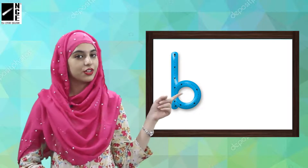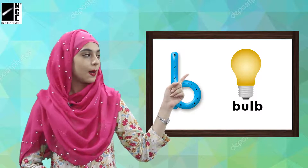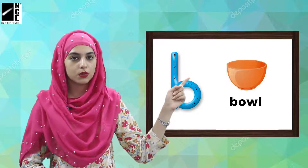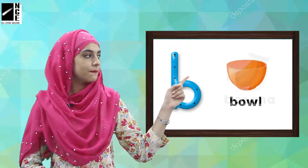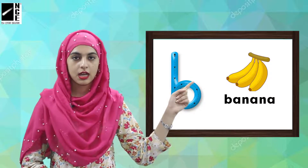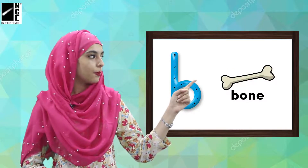Here is the picture of B. Now what are we going to do? Let us see pictures with words. So let's read with me: B — bulb. B — bowl. B — banana. B — bone.